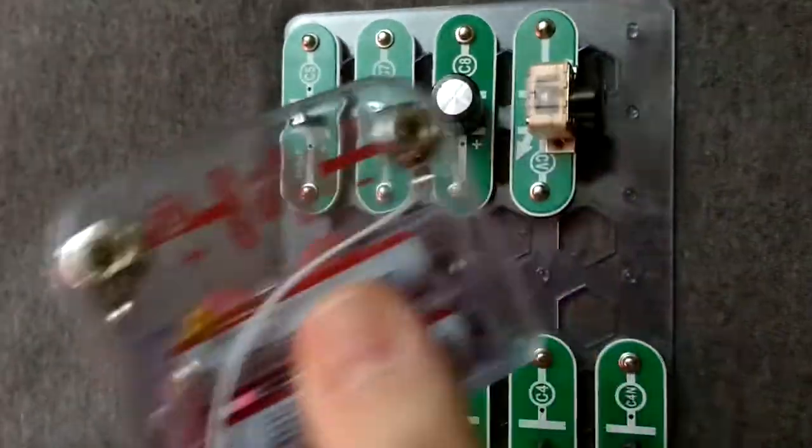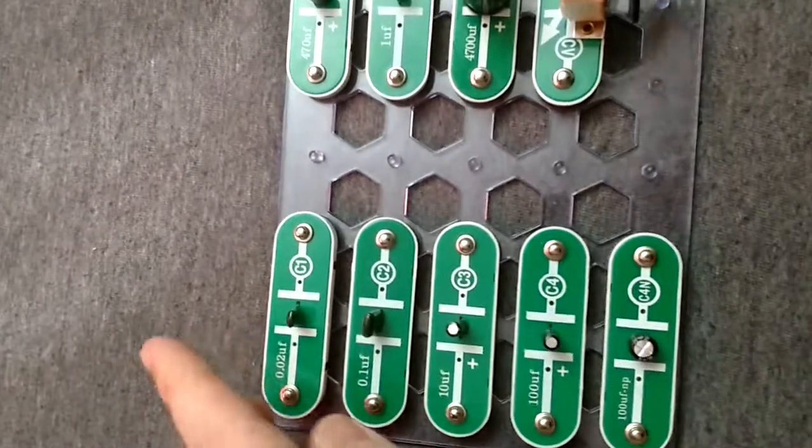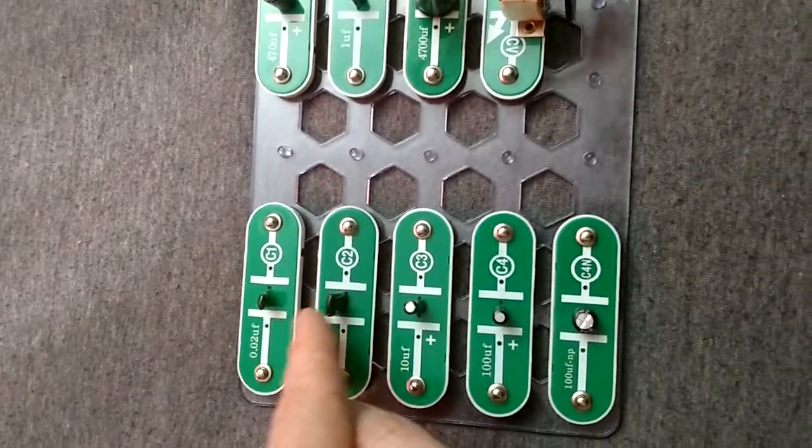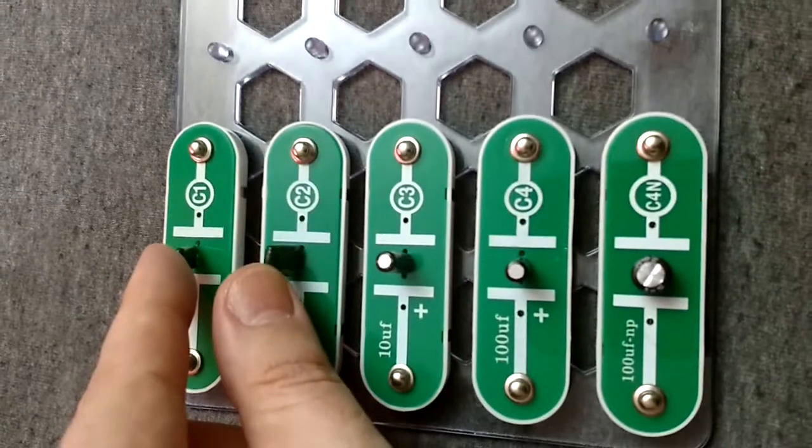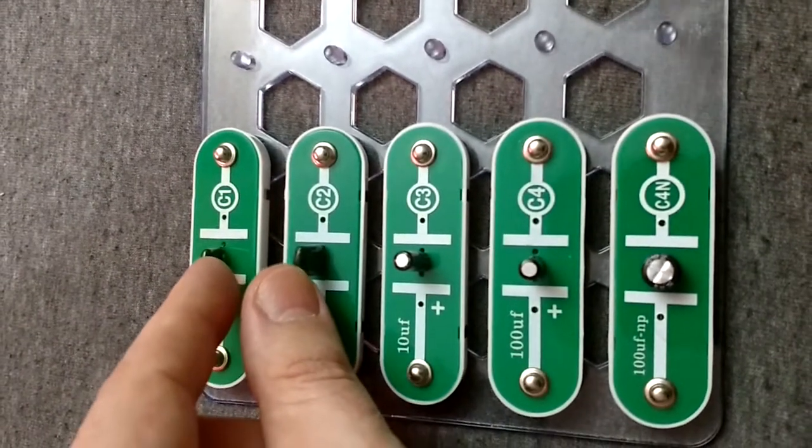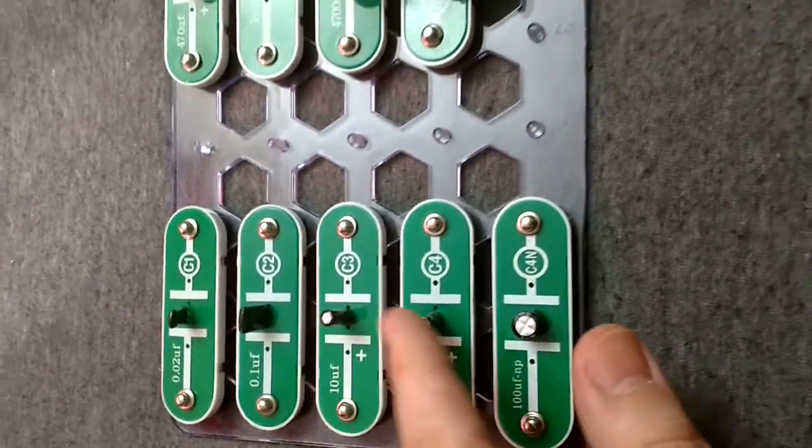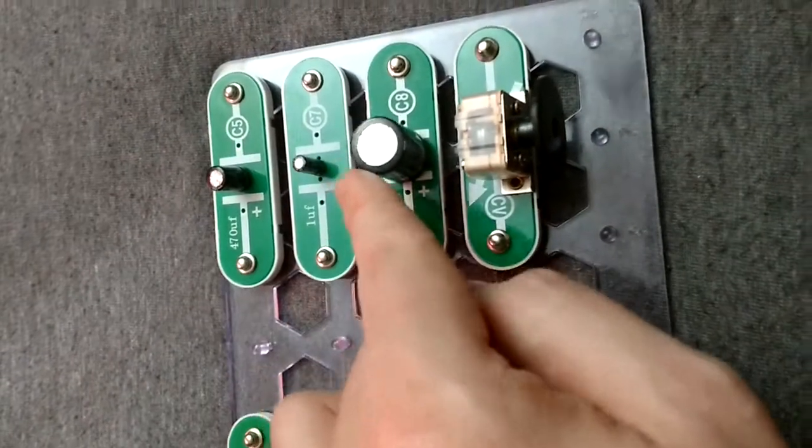Tantalum capacitors look kind of like little envelopes or pills or gum. And then you have the electrolytic ones which look like cans.